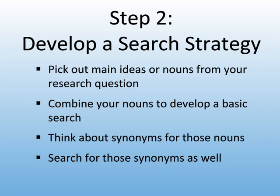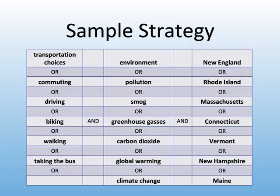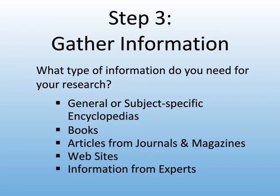Use those nouns and combine them to begin your search. It's also helpful to think about synonyms for those nouns and use those for searching as well. For example, if we started by searching for 'transportation' and 'environment,' we may also want to create searches that include synonyms like 'commuting' and 'greenhouse gases,' or 'travel' and 'ecology.' Here's the sample search strategy for our research topic: we've pulled out the main ideas — transportation choices, environment, and New England — and listed possible synonyms under each for searching.